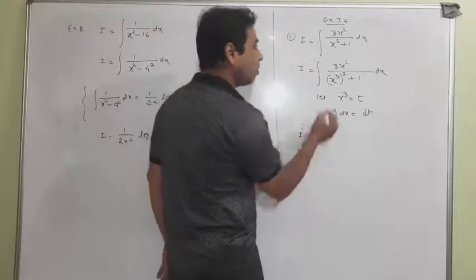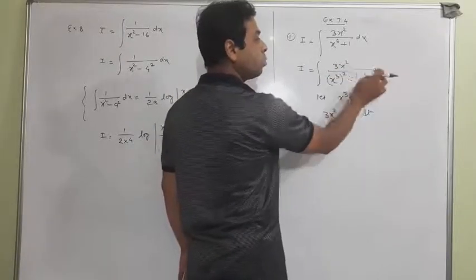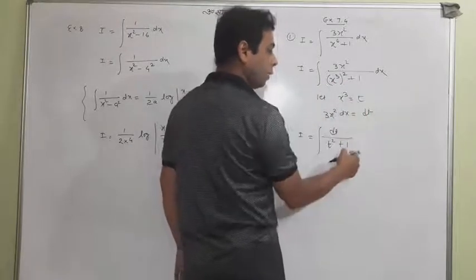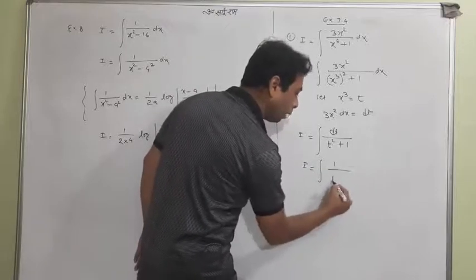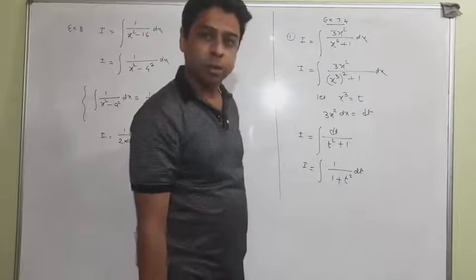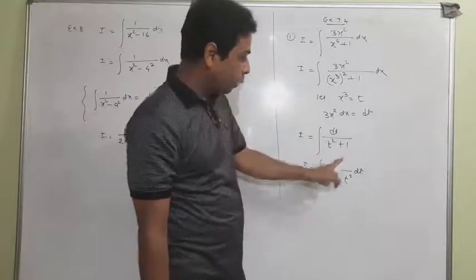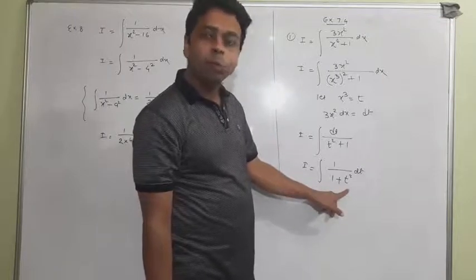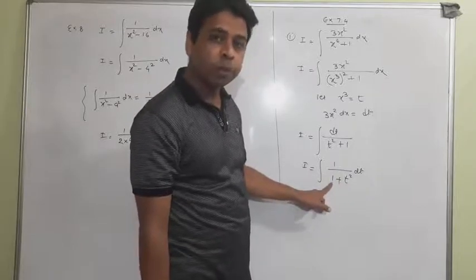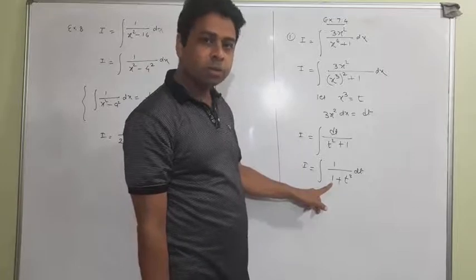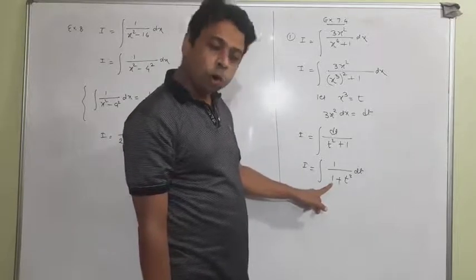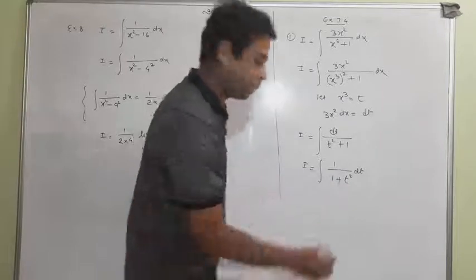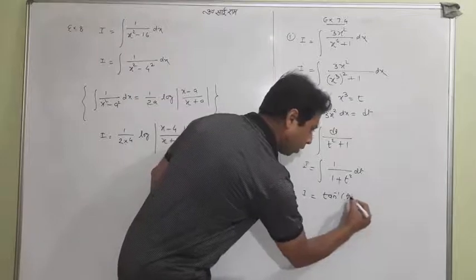Notice that 3x squared dx is available for replacement, so it becomes dt. The x cubed becomes t squared, and the whole situation turns into 1 upon 1 plus t squared dt. Recall: 1 upon 1 plus t squared is the standard form giving arctan t. You can also use 1 upon t squared plus a squared with a equal to 1, giving 1 upon a times arctan(x upon a).